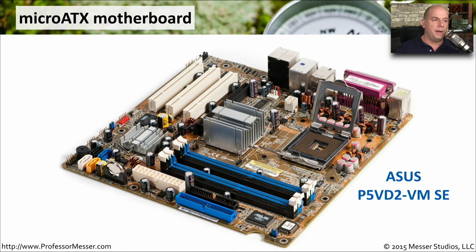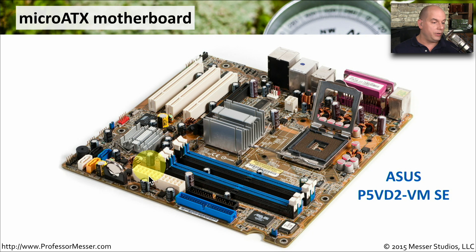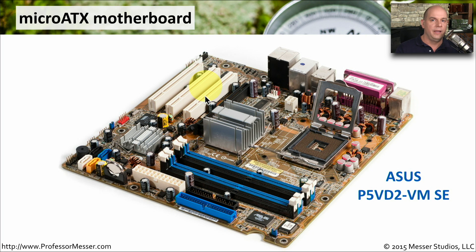Here's a close-up shot of a Micro ATX motherboard — the ASUS P5VD2-VMSE. This motherboard has a 24-pin power connection, a place for your CPU, some memory slots, and only three expansion slots on this particular model, limited by the size of the device. Everything is a little bit closer together. That's one of the disadvantages of the Micro ATX: everything is in a smaller form factor and you don't have quite as much expansion as you might have on a normal ATX-sized motherboard.